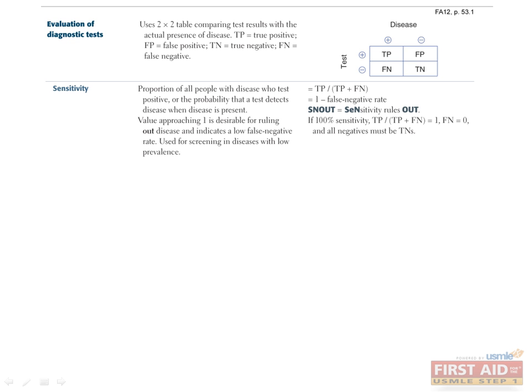Sensitivity is the ability of a test to detect a disease when it is present. It is defined as the proportion of all people with a disease who test positive, or the true positives divided by the sum of the true positives and false negatives. A test with high sensitivity would be a rule-out test, thus the mnemonic SNOUT. A value approaching one is desirable for ruling out a disease because it indicates a low false negative rate. If sensitivity equals one, false negatives must be zero, and therefore all negative test results would be true negatives. Hence, a negative test result in a highly sensitive test rules out the possibility of disease.